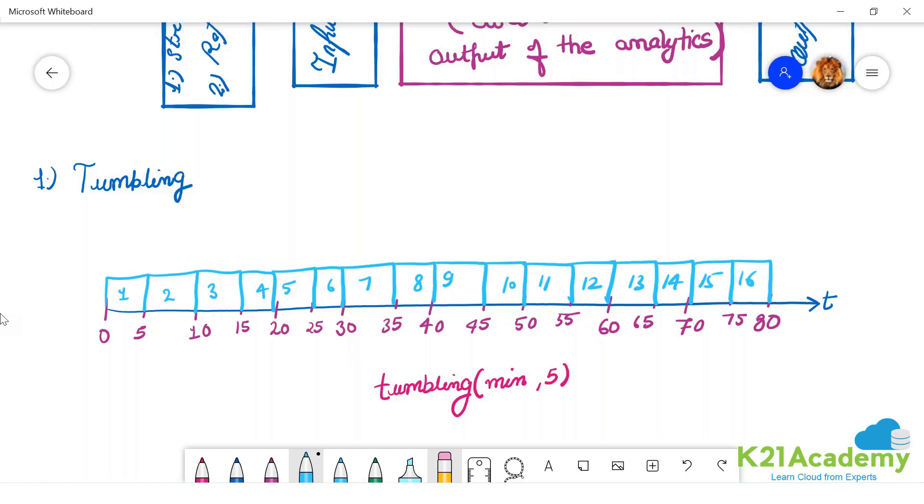Tumbling window. Certain properties of tumbling window: contiguous or continuous, whatever you want to say - continuous, there is no gap. Continuous, non-overlapping.